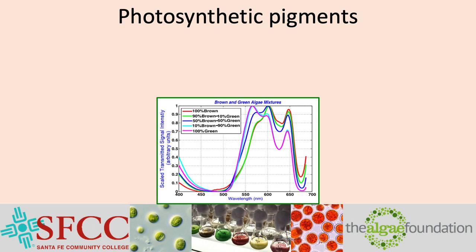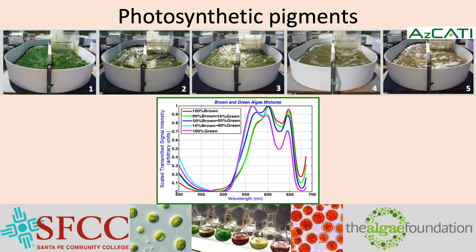The absorbance spectra of algal cultures can give you a lot of information about the condition of that culture. The purple line shows the absorbance of PAR by a culture of pure green algae, and the red line shows the absorbance by pure brown algae. The other lines show various mixed ratios of green and brown algae. Ideally, you would use this quick and inexpensive test to detect contamination by brown algae early, so you might be able to correct the situation before needing to drain the pond and start over.